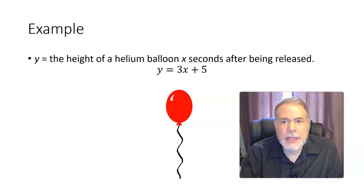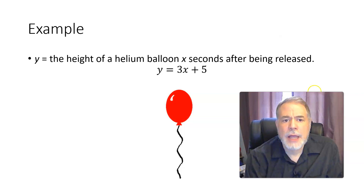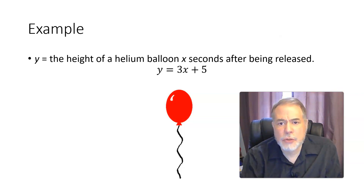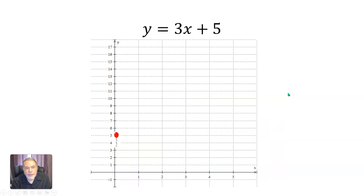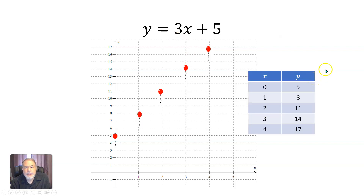Imagine we've got a helium balloon that's rising up into the air, and its height x seconds after it is released is given by the equation y equals 3x plus 5. So as the balloon floats up into the air, its height is always three times how many seconds it's been since you let go of it, plus 5. So it starts out five feet up; after one second it's eight feet up, after two seconds it's 11 feet, after three seconds it's 14 feet, after four seconds its height is 17 feet, and so on.